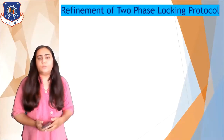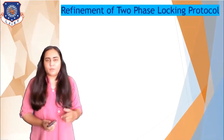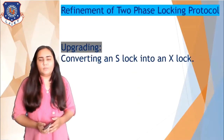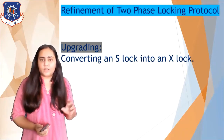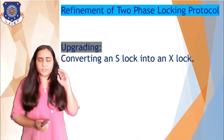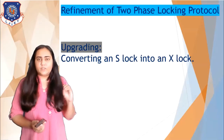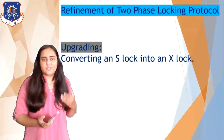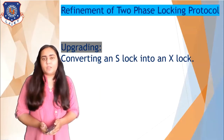Other than this, there is one more type of variant where we allow the transaction to upgrade and downgrade. Upgrading means converting an S lock into an X lock — S stands for shared lock and X stands for exclusive lock. Initially, when the transaction simply needs to read a data item, it will only obtain a shared lock, but when the transaction wants to write that data item, it will change its shared lock to an X lock.